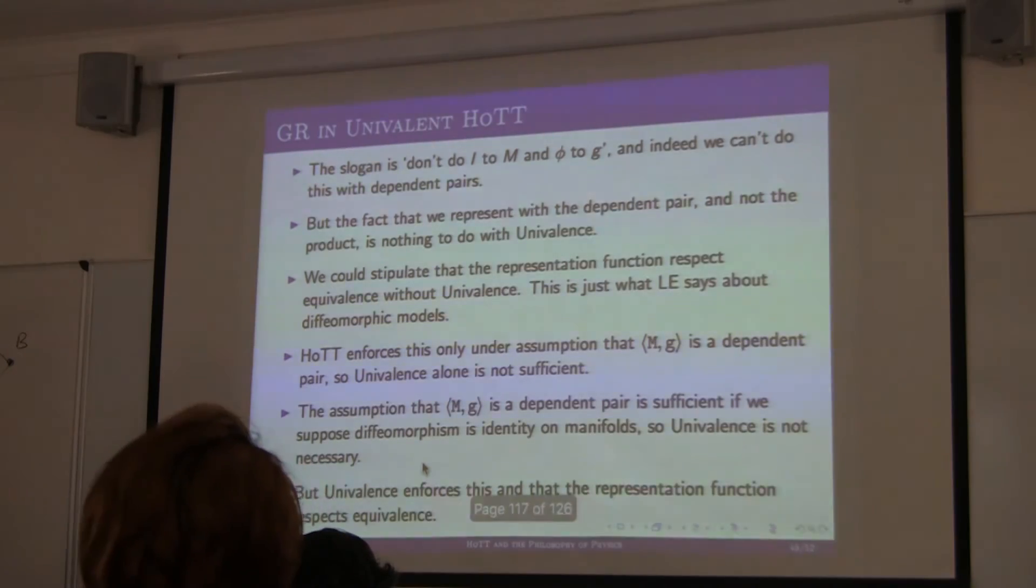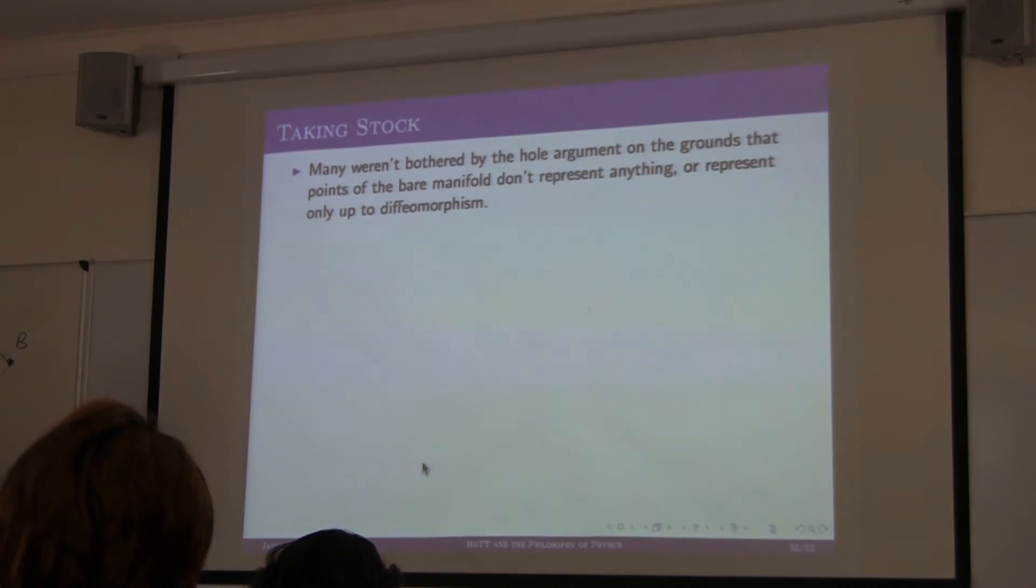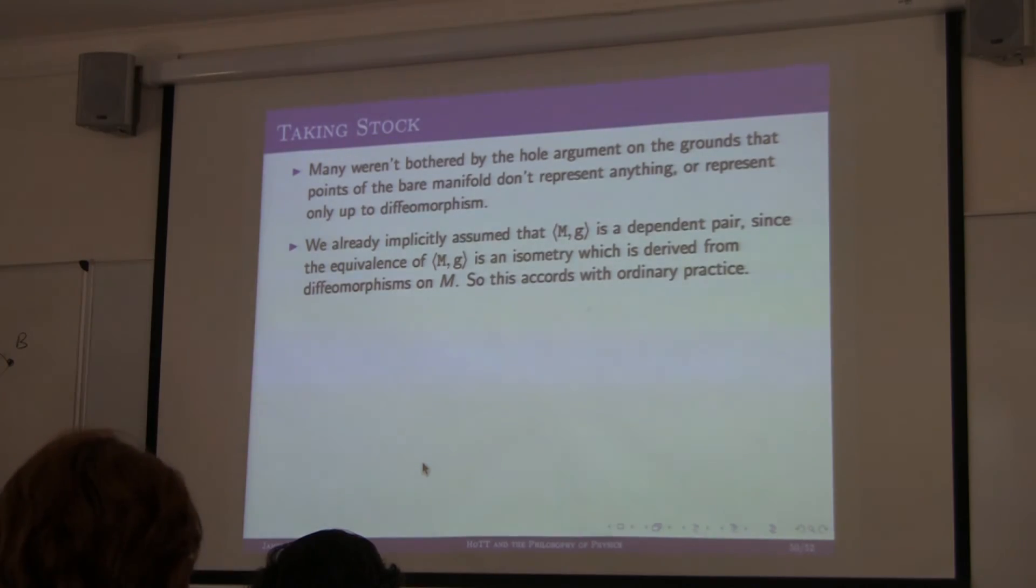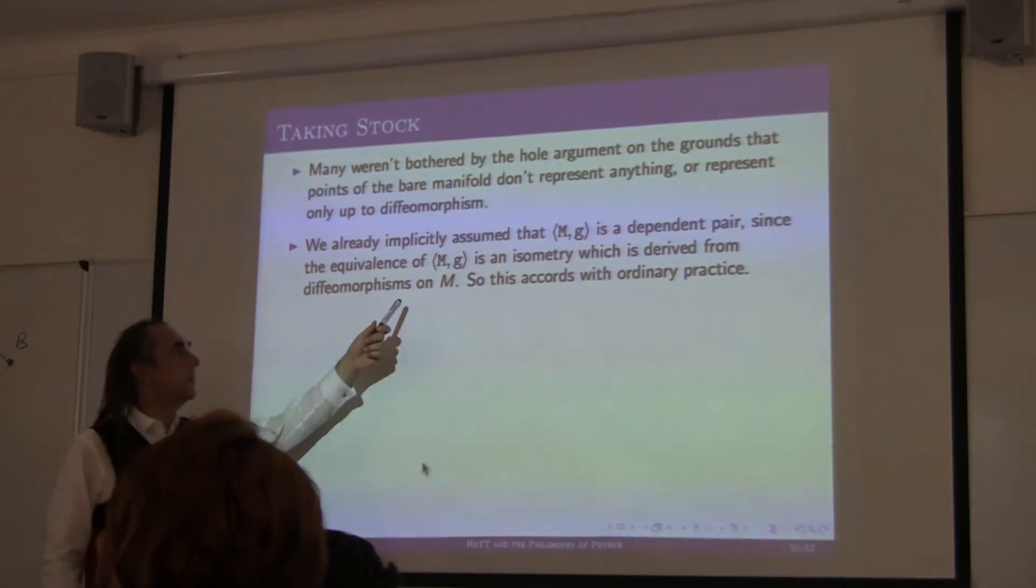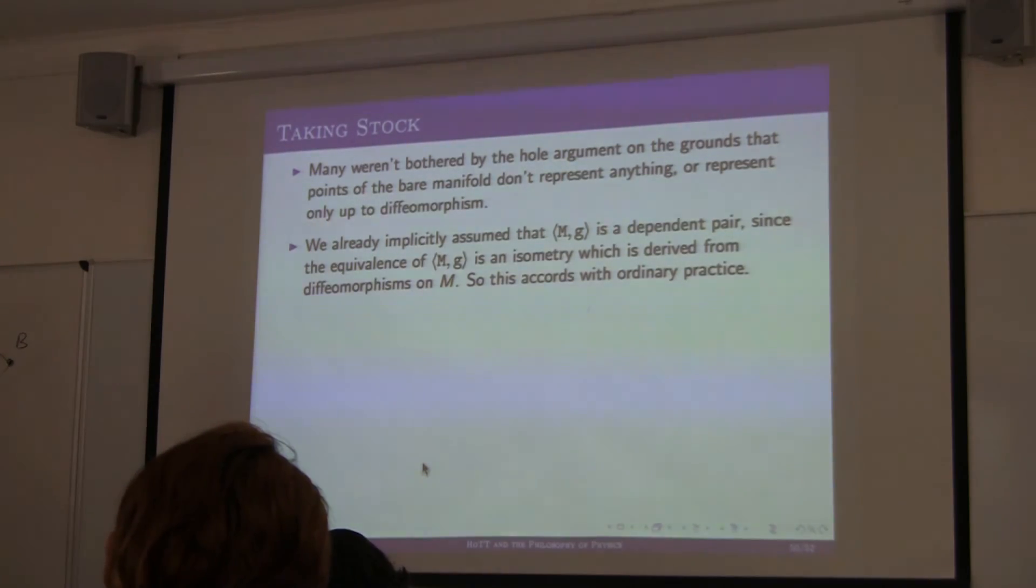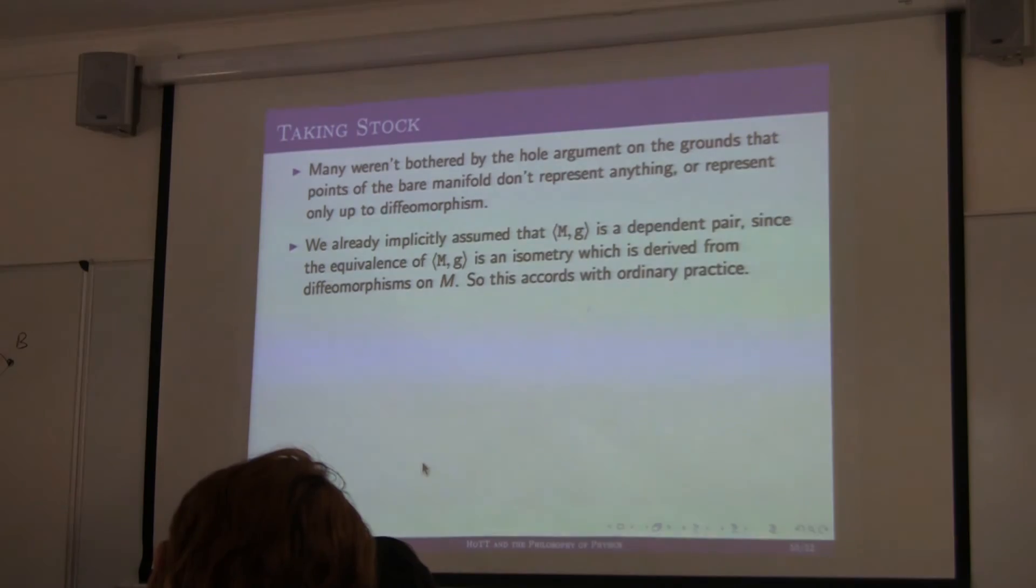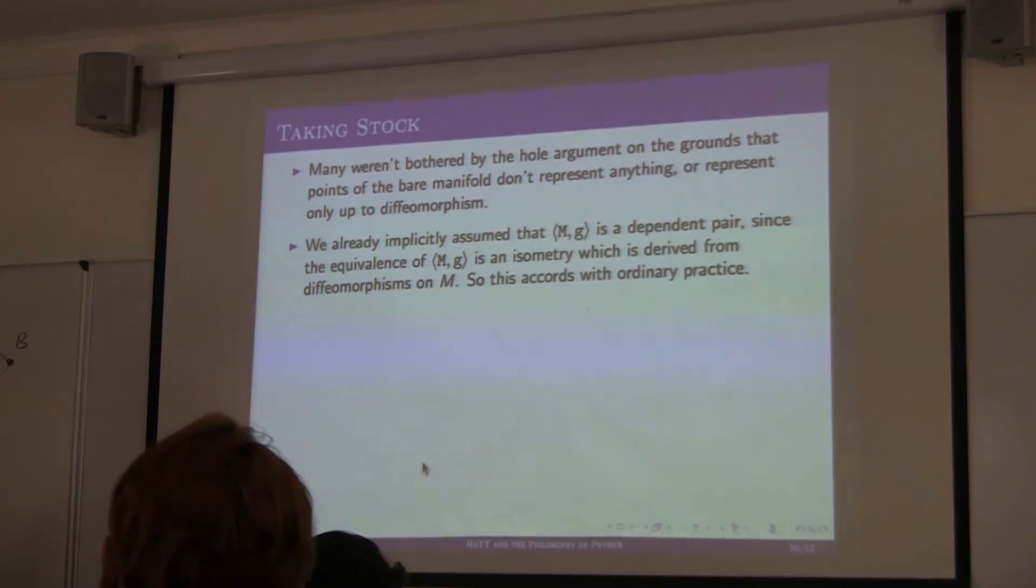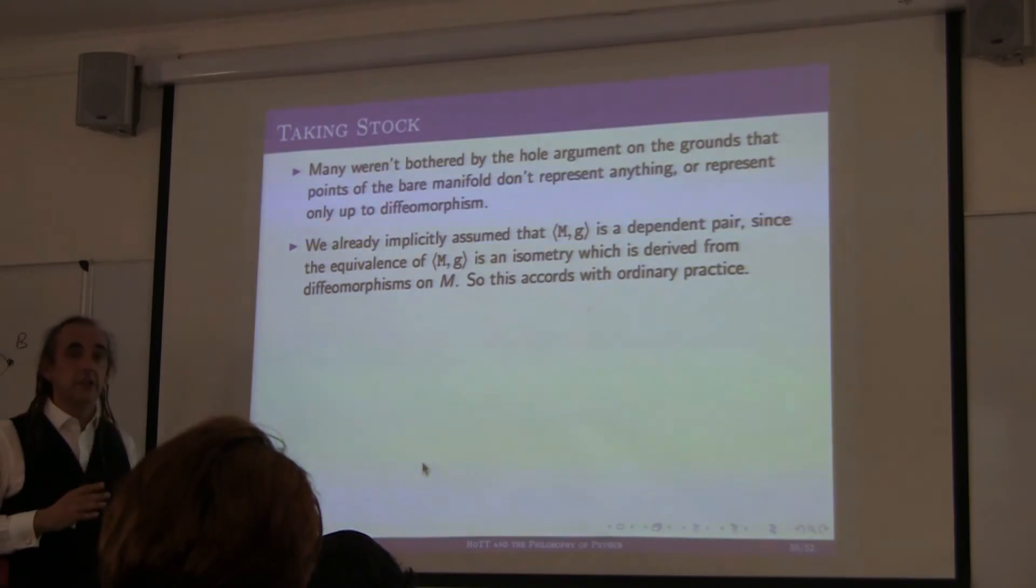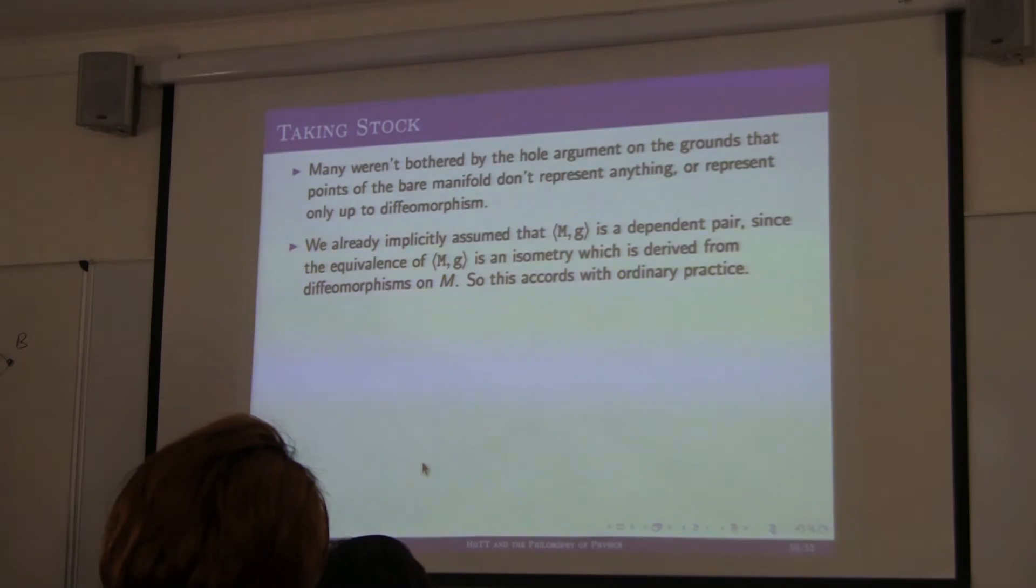And application of H to Z is, while it's an identity, it's not the trivial identity. And that lives to give us an action from G to an image of G, an isometric image of G. But the way that we were able to do that was because, I mean, we were only allowed to do that because we have this dependent pair construction. So, I mean, given that I've run over time and I'm sure people want to discuss this, I'll just sort of come to my conclusion, I think. So, what I'm going to say is, of course, many people weren't bothered by the whole argument in the first place, that's fine. If you're doing things in HoTT and you assume that the right way to represent things is by a dependent pair, then you will not be allowed to generate the whole argument.